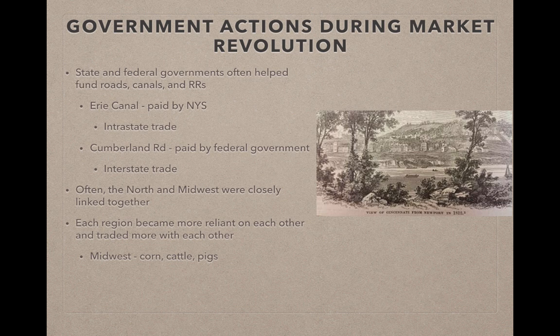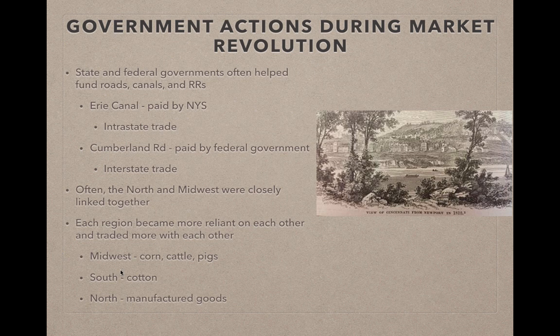In the Midwest, places like Cincinnati developed, focusing on pigs in particular — the nickname for the city was 'Porkopolis.' They would grow pigs and ship them throughout the country. The South focused on cotton and sent that cotton to the North and textile factories. The North focused on manufacturing goods, and there was trade between these three regions. But because infrastructure was built up more in the Midwest and North, they benefited more than the South.